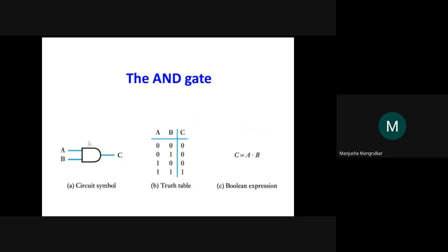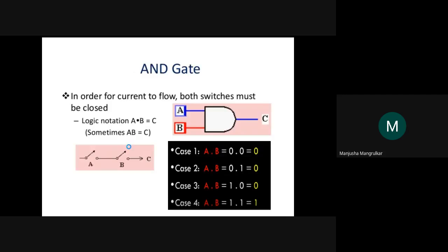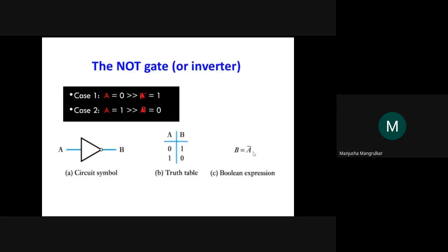This is the symbolic representation of the AND gate. The truth table shows A and B as inputs, C as output. If both inputs are zero, output is zero. If any one input is zero, output is zero. Only if both inputs are one, output is one. The Boolean expression is C equals AB. The Boolean expression of NOT gate is B equals A complement.